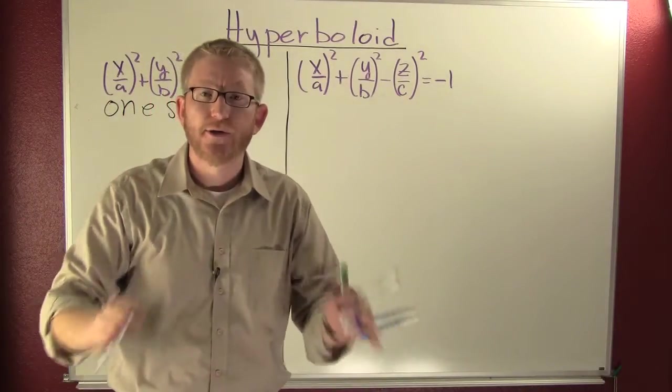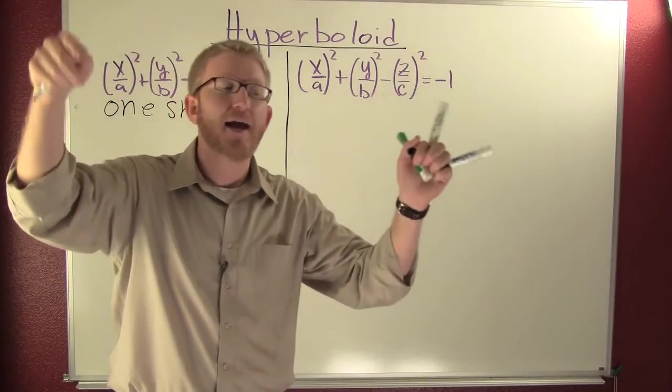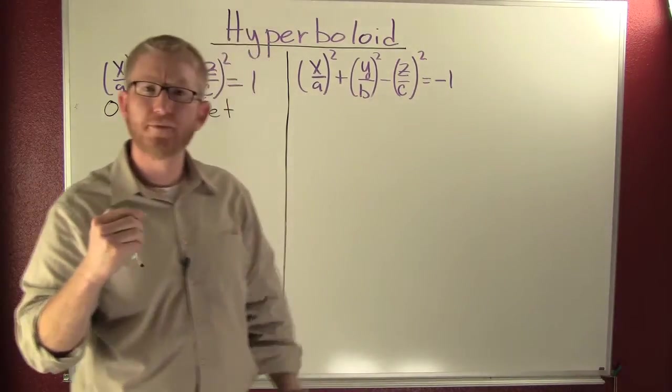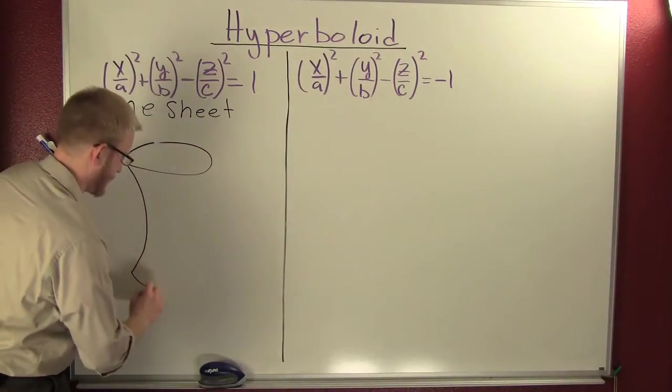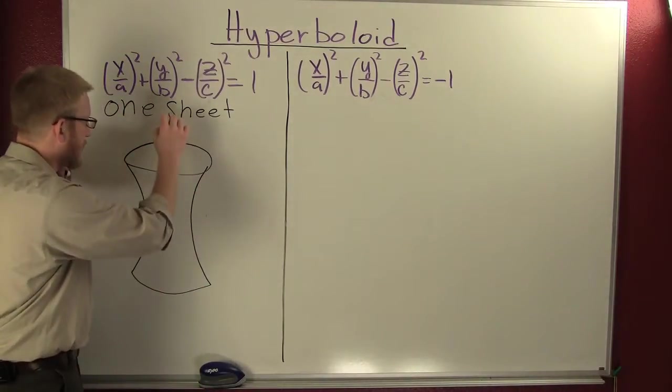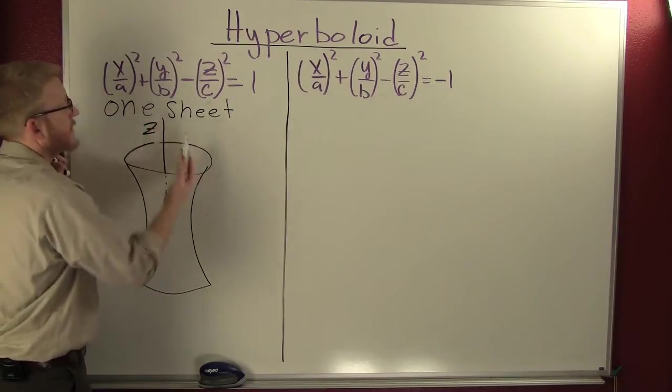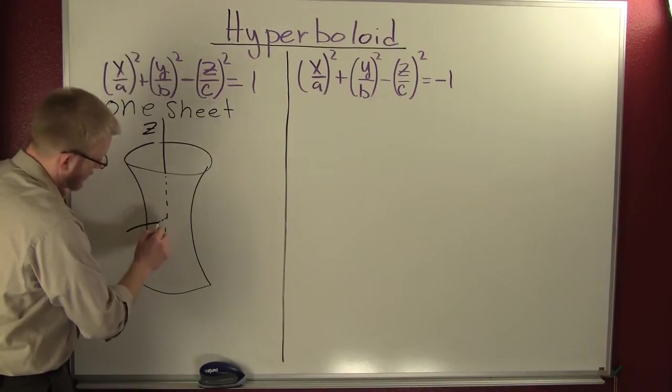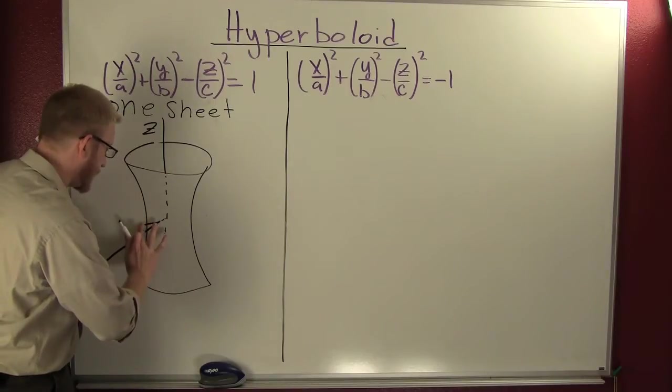A hyperboloid of one sheet is kind of like an hourglass. You can call it one sheet because you would be able to make that shape with one piece of paper. It looks a little bit like this, where your Z is up and down in our usual orientation. Your X is coming out the board.